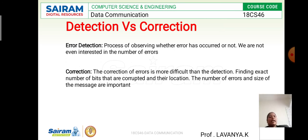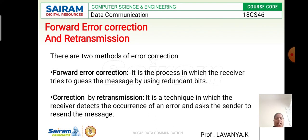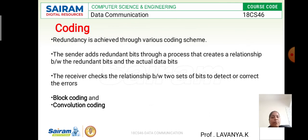Moving on to forward error correction and retransmission — these are two methods in error correction. Forward error correction is the process by which the receiver tries to reconstruct the message using the redundancy bits. In correction by retransmission, the receiver detects an error and asks the sender to resend the data. If any deficiency is found in the message at the receiver side, an acknowledgement or request is sent back to the sender to retransmit the data once again.